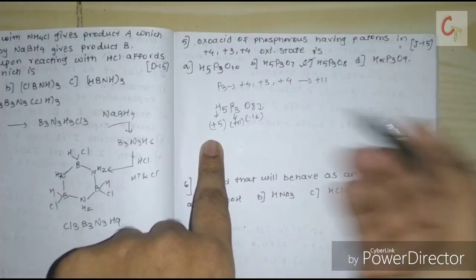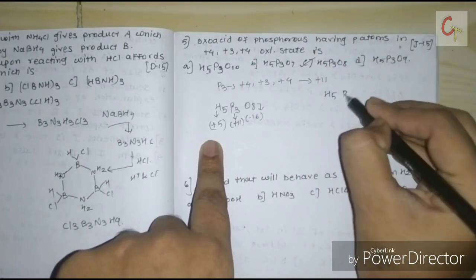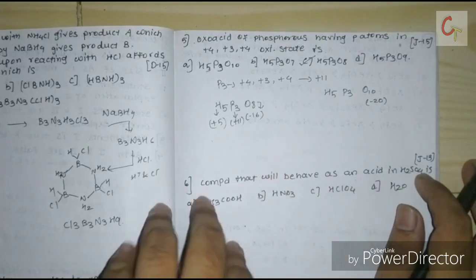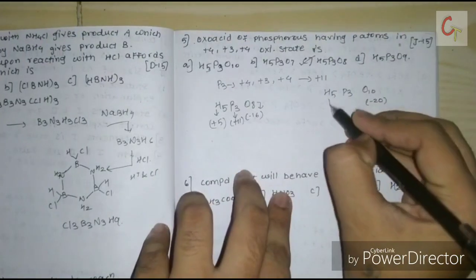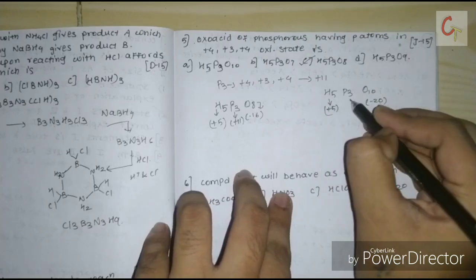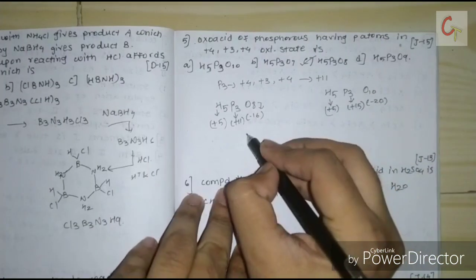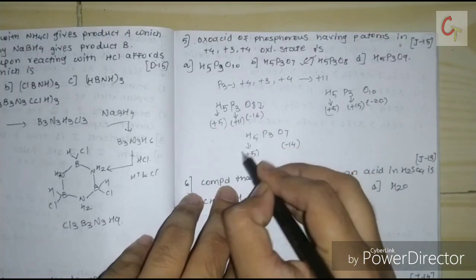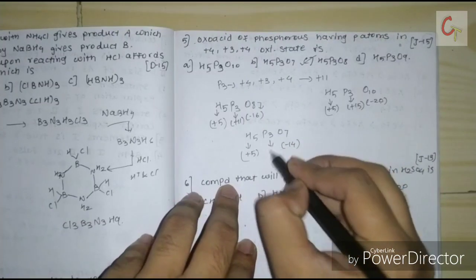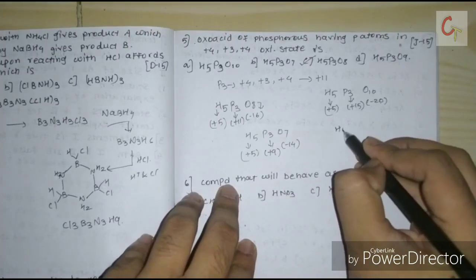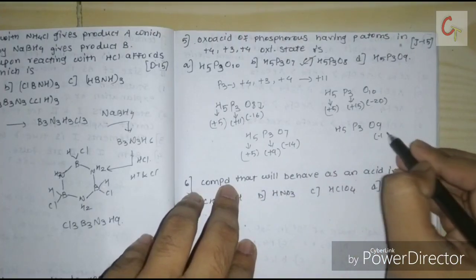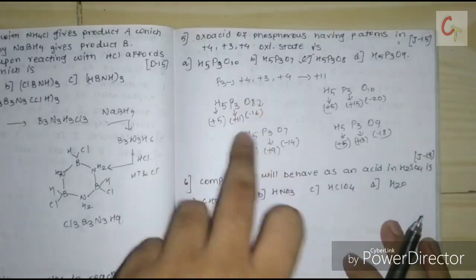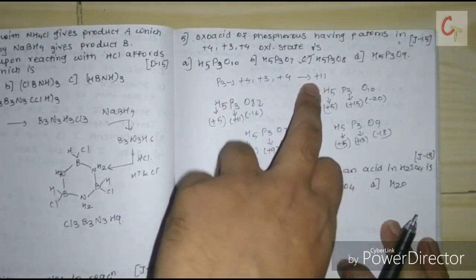Comparing other options: for H5P3O10, oxygen gives −20 (10 × −2), hydrogen gives +5, so phosphorus total = +15. For H5P3O7, oxygen gives −14, hydrogen gives +5, so phosphorus total = +9. For H5P3O9, oxygen gives −18, hydrogen gives +5, so phosphorus total = +13. Only option C gives three phosphorus atoms with a total charge of +11. Correct option is C.